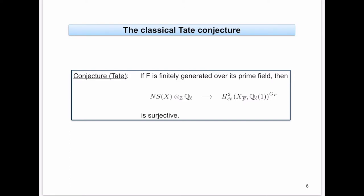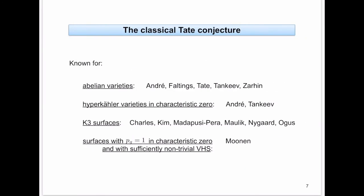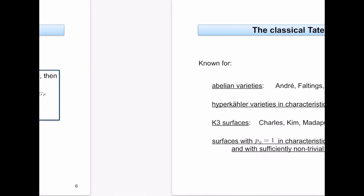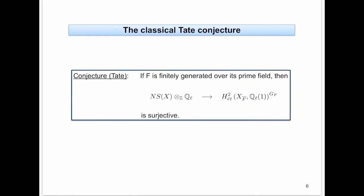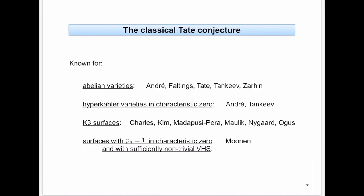So F could be, for example, a number field or a function field, but not a completion of it — this is not what Tate originally conjectured. For co-dimension one cycles, the Tate conjecture is known for abelian varieties, by work of André, Faltings, Tate, Tankeev, and Sahin.